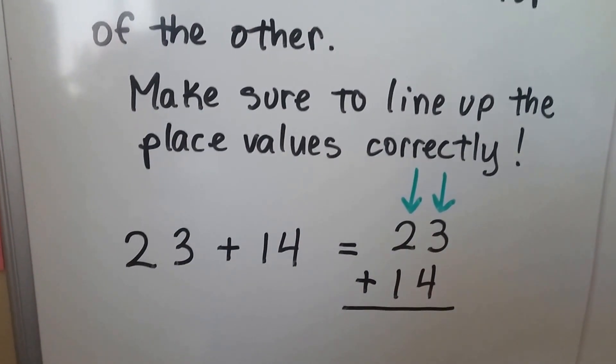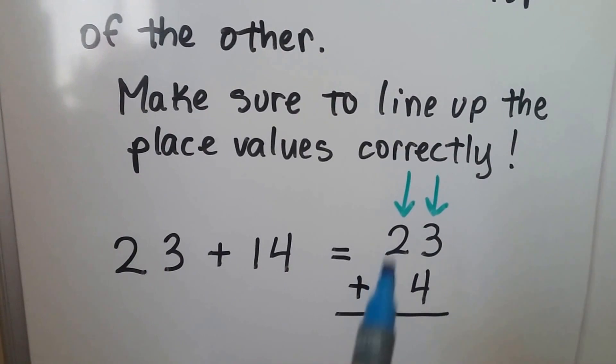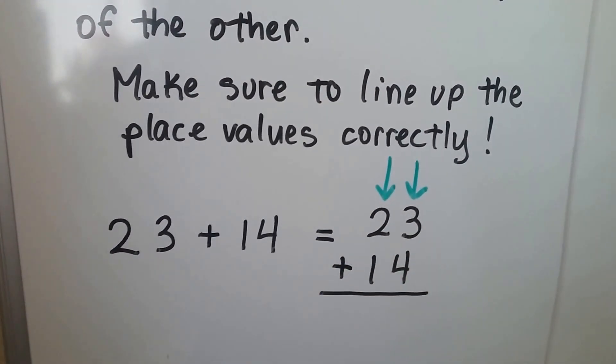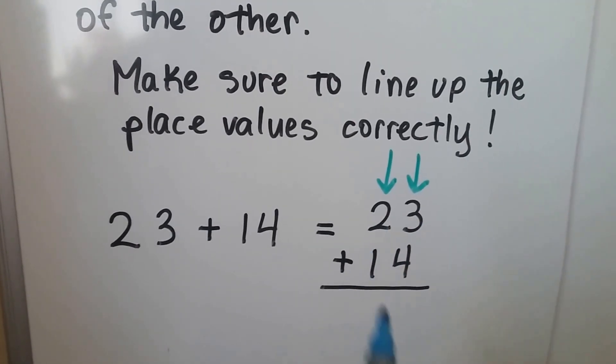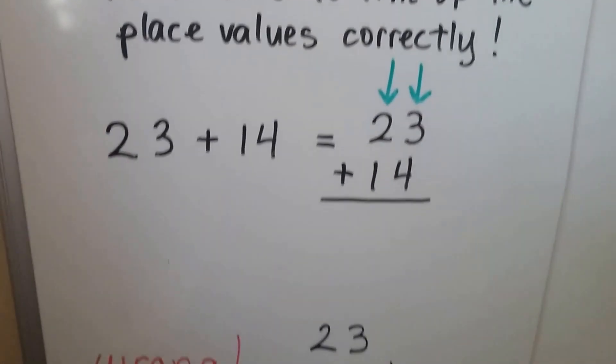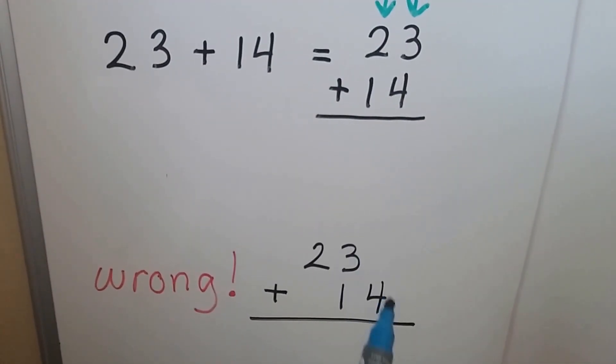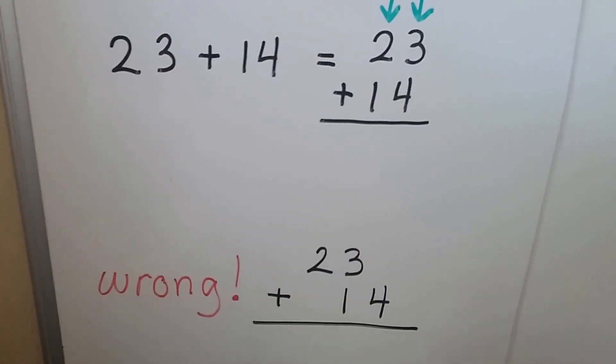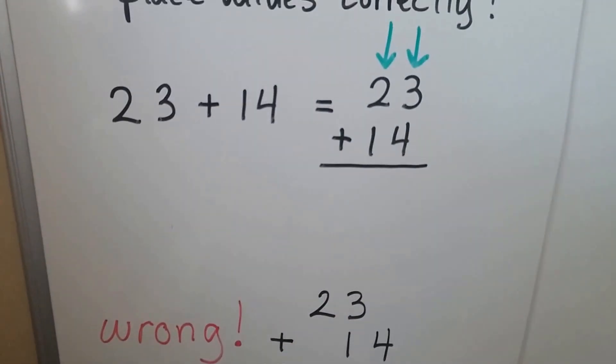If we have an addition sentence 23 plus 14, we can rewrite it so that the numbers are on top of each other. The 23 is on top of the 14. We have to make sure the ones place and the tens place are lined up nice and neat. You don't want to make a mistake and have three ones and four ones and then line the ones up with the ten. Then you're going to get a wrong answer. Just make sure they're lined up nice and pretty.